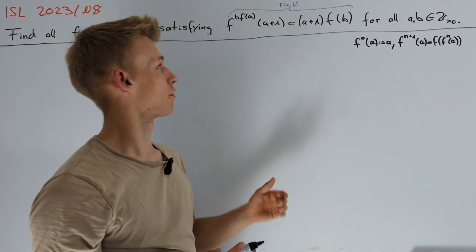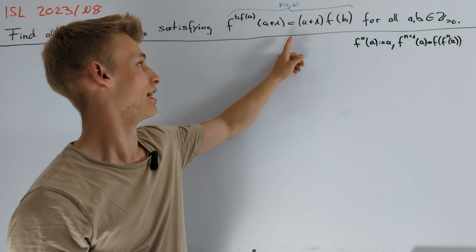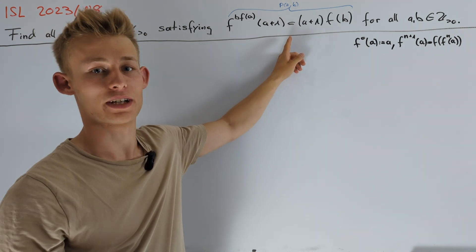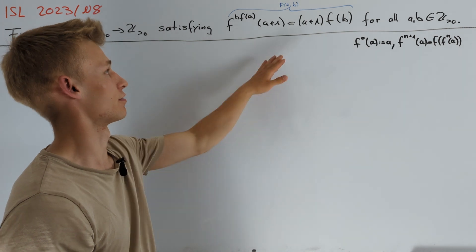We see that the approach of plugging in small numbers into the equation does not work in this case. And therefore, we have to do something else in the beginning. So let's try to collect some properties about this function.